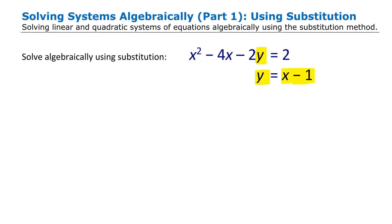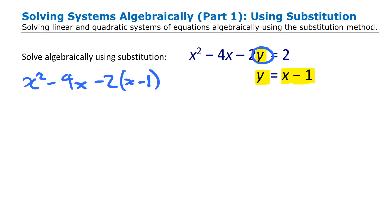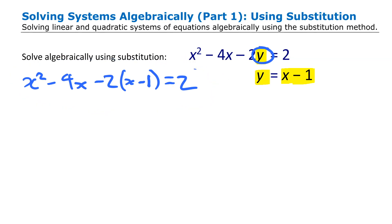So I'm going to rewrite the first equation but instead of y I'm going to write x minus 1. That gives me x squared minus 4x minus 2, but instead of y I put x minus 1, and that equals 2. This new equation has combined the two equations in a way that eliminates y, leaving only one variable.